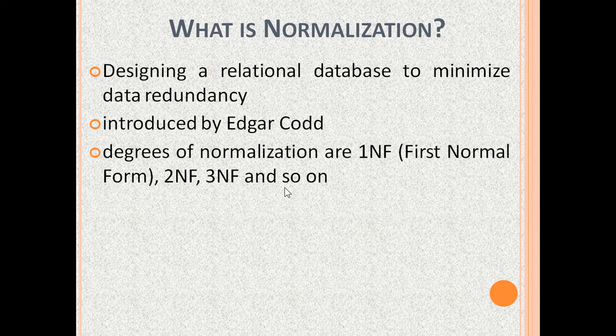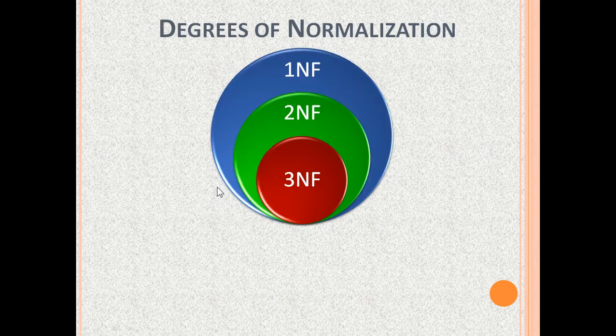There are various degrees of normalization. 1NF is the first normal form, 2NF is the second normal form, 3NF is the third normal form, and so on. Each degree of normalization means a more strict design than the previous degree. If a table is in 2NF, it means that it is already in 1NF. If a table is in 3NF, it means that it is already in 1NF and 2NF.